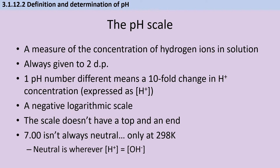The pH scale is a measure of the amount of hydrogen ions in a unit volume in solution — in other words, the concentration of hydrogen ions. We always give pH to two decimal places. One whole integer difference on the pH scale means a tenfold change in hydrogen ion concentration because this is an exponential scale. We express concentration using square brackets, and the pH scale is a negative logarithmic scale of the hydrogen ion concentration, which means that as the pH numbers get smaller, the concentration of hydrogen ions gets higher.